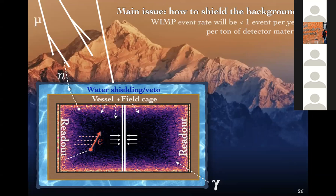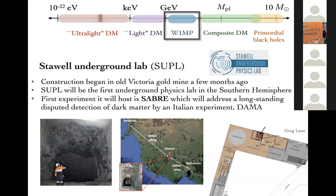There are numerous experiments running around the world. Particularly exciting is that an underground lab is being built in Australia, in an old gold mine in Victoria near Stawell — the first underground lab in the Southern Hemisphere. The first experiment it will host is SABRE, which will directly test the claim of dark matter detection by the DAMA experiment, which for decades has claimed to detect dark matter but which nobody else believes.